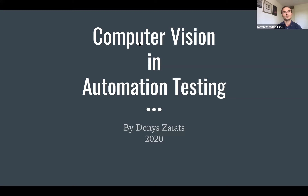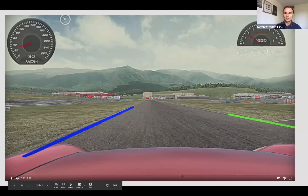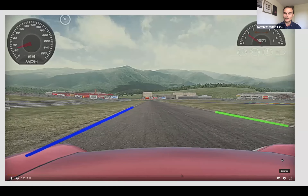Today I would like to show and tell something interesting about computer vision and how it is possible to use computer vision in automation testing — not only for screenshot comparison but also in the scope of functional tests. I'm not going to show a lot of code examples, but rather explain the most important ways of thinking when working with computer vision.